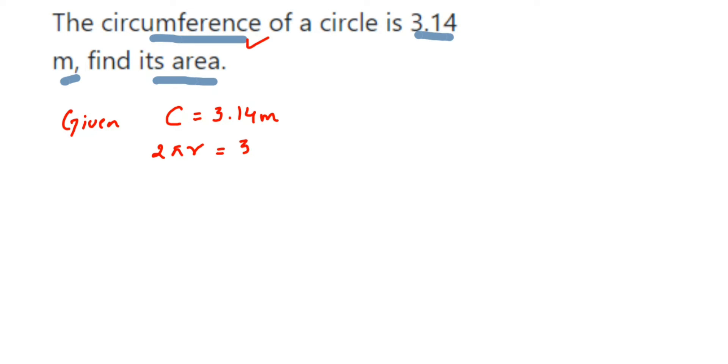Now we know the pi value - we can either take 22/7 or we can take 3.14. So let me substitute: 2 × 3.14 × r. We don't know r, so let me keep it as r itself, and then 3.14.